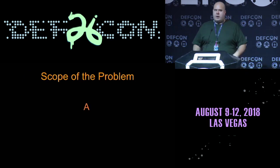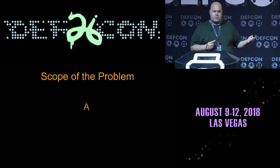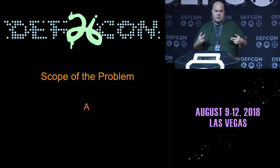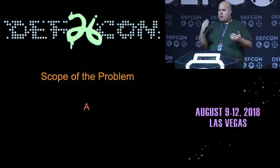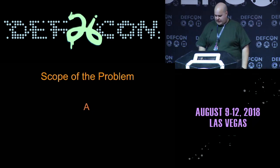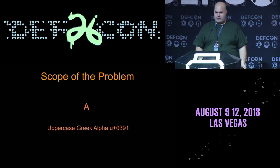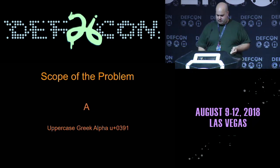I want to really drill into the scope of the problem. There are characters that are easy to confuse — two characters look alike. That's not a capital A; that's an uppercase Greek alpha. So you can have two characters that are confusing.